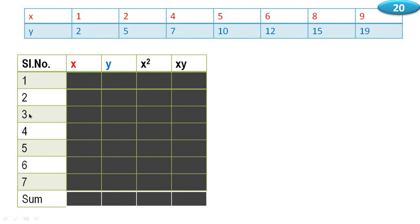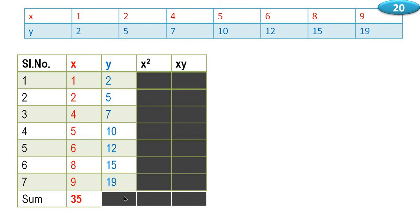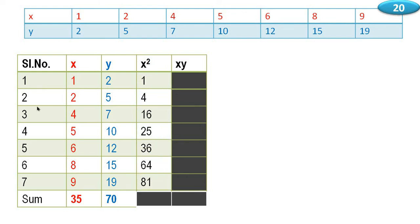We set up a table with serial numbers 1 through 7 and a row for the sum. We write x and y values in columns. We need to find the sum of x, the sum of y, the sum of x squared, and the sum of x times y. Writing the x values: the sum of x equals 35. Writing the y values: the sum of y equals 70.